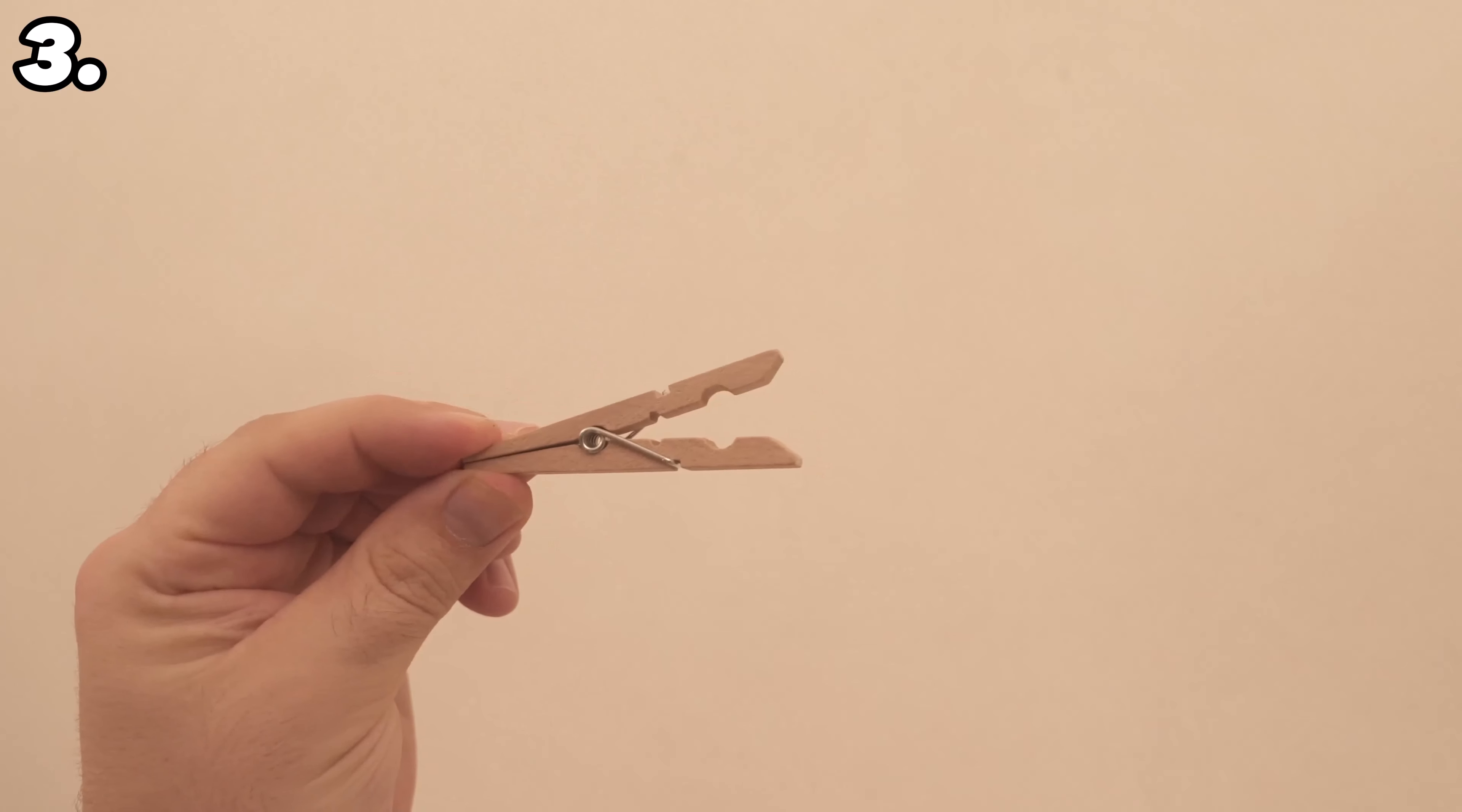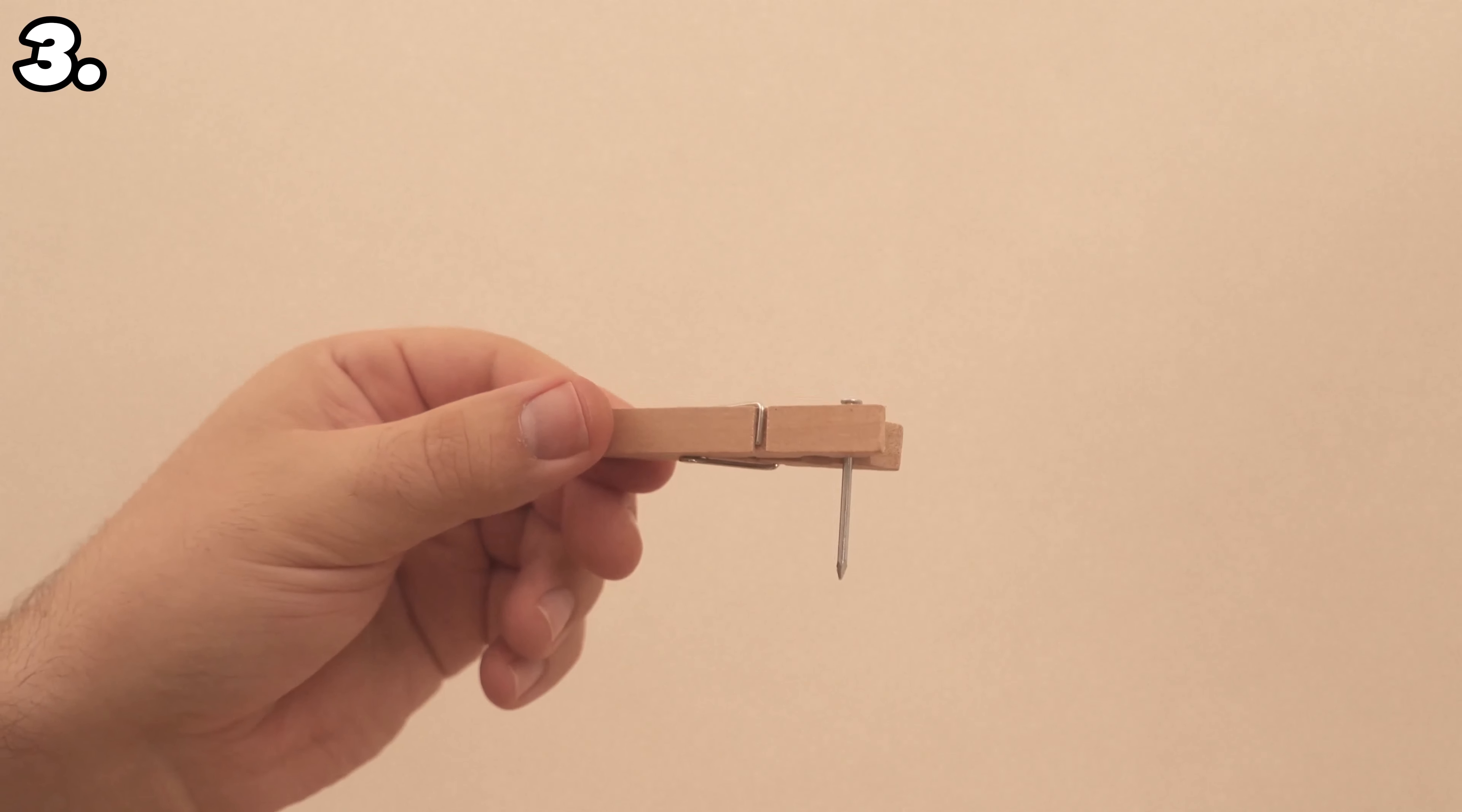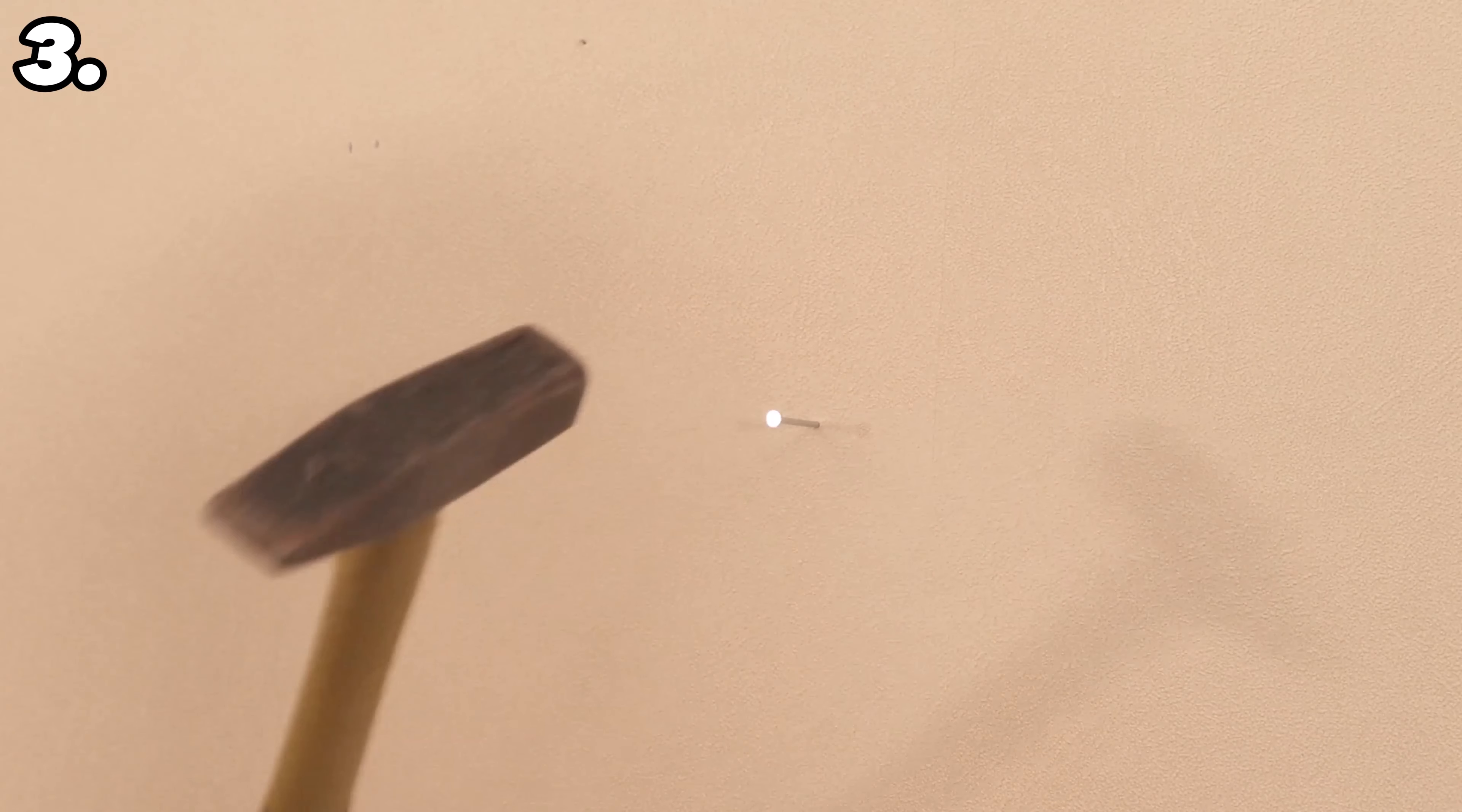All you have to do is clamp the nail in the clothespin. You can then use the clothespin to place it at the point where you want to hammer it into the wall. As your fingers are now only holding the whole thing at the outer end of the clothespin and are no longer near the nail, you no longer have to worry about hitting your fingers. After the first few taps, the nail will be far enough into the wall so that you can remove the clothespin completely and then hammer the nail into the rest of the wall.